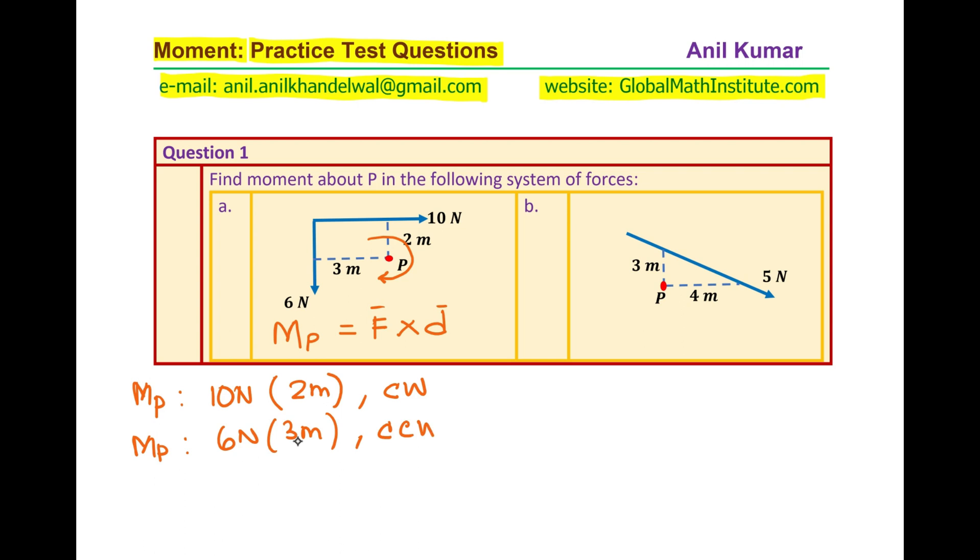Now when you want to have net moment at any particular point you actually add all these moments. So we'll do sum of all the moments, which is forces into distances. Now you should consider clockwise as positive or negative and counterclockwise in the opposite direction. So we'll consider clockwise as positive and counterclockwise as negative for our solution.